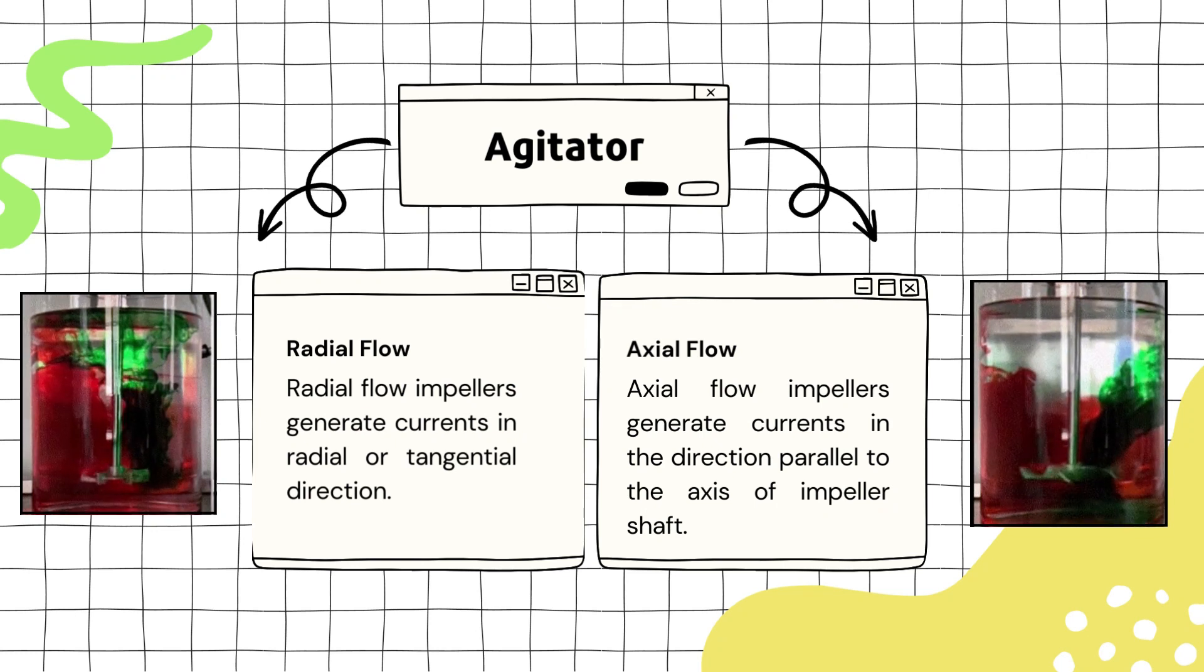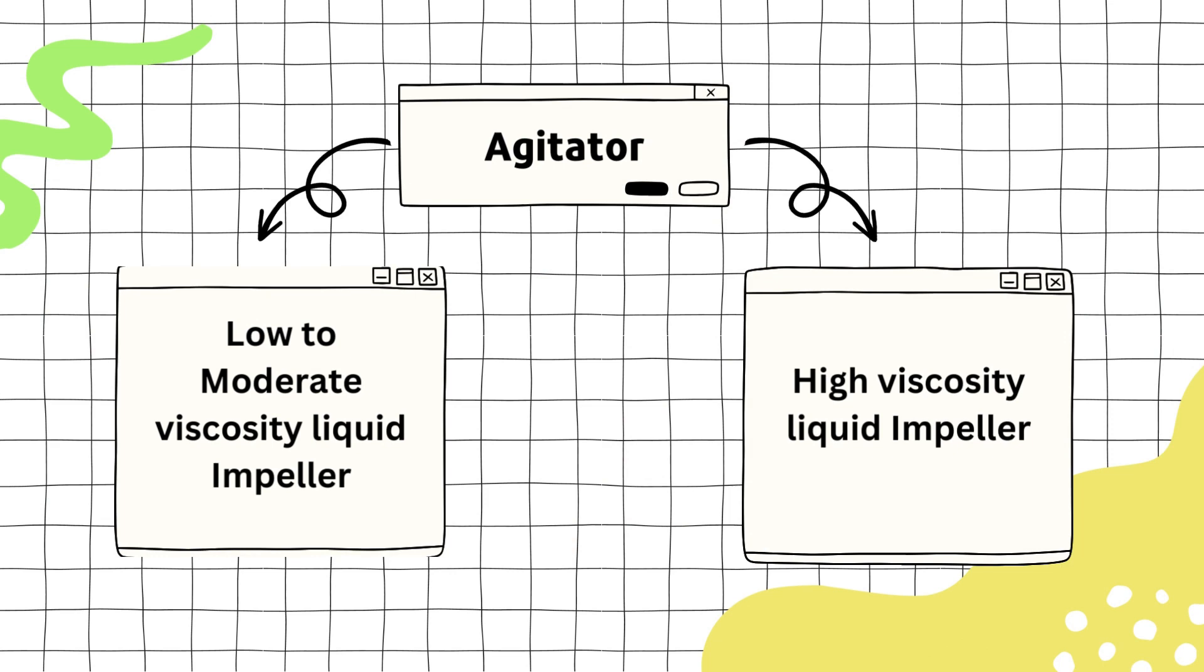We can also classify agitators based on the liquid we are handling, meaning the classification is based on how thick the liquid is. First, there are impellers used for low to moderate viscosity liquids, and another category is for highly viscous liquids.